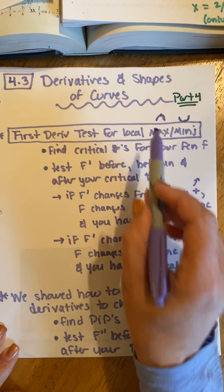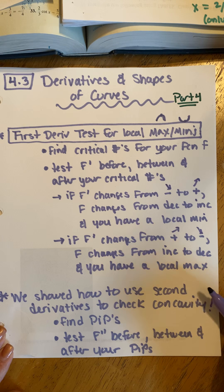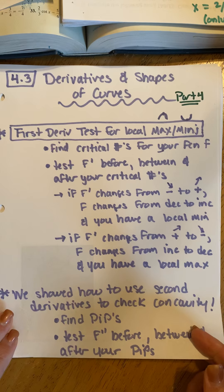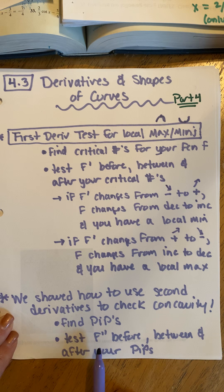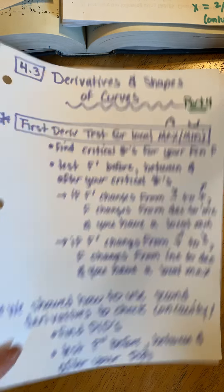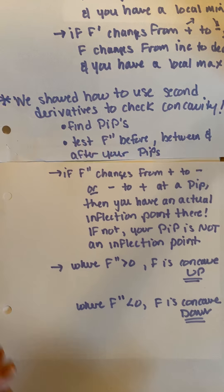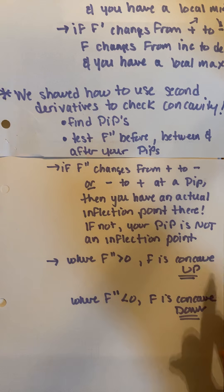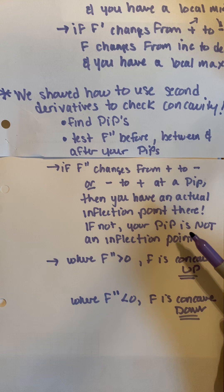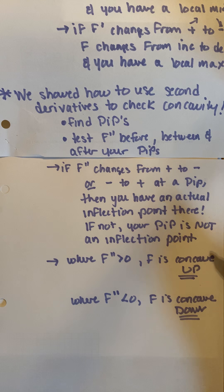That has a formal name — it's called the first derivative test for local max and min. The next thing we did is we showed how we use second derivatives to check concavity. We found the potential inflection points by setting the second derivative equal to zero and seeing where the second derivative was undefined. Then we tested the second derivative before, between, and after our potential inflection points. If the second derivative changed sign at a potential inflection point, then we have an actual inflection point there.